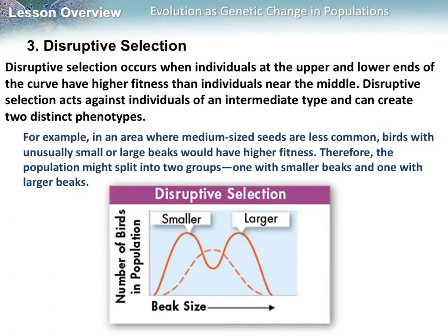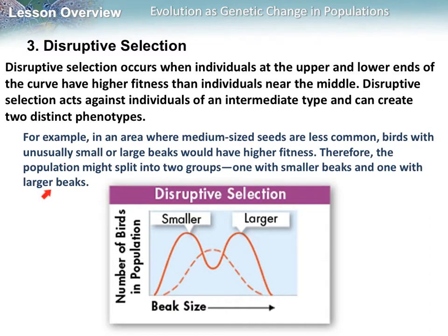Disruptive selection is when the upper and lower ends of the curve have higher fitness than individuals in the middle. It acts against the intermediate and can often result in two distinct phenotypes. For example, with beak size, if medium-sized seeds are less common and there are lots of small and large seeds, then unusually small or unusually large beaks have higher fitness. Over generations, we get more birds with smaller beaks and more with larger beaks, and the population might split into two groups.